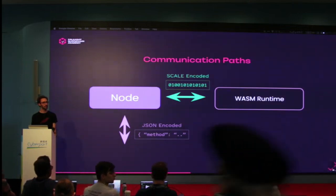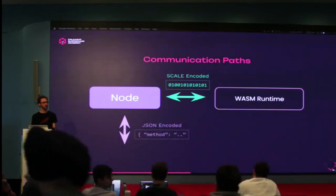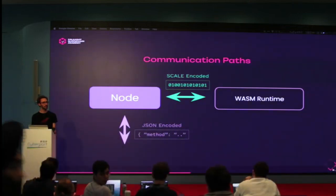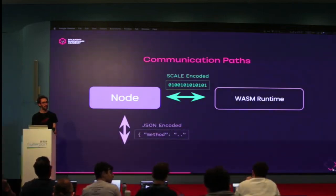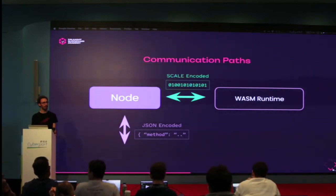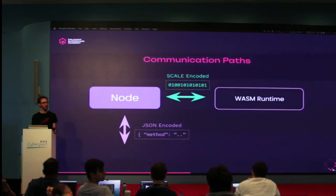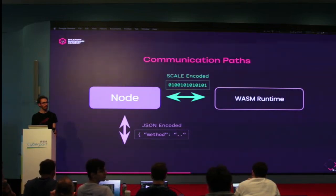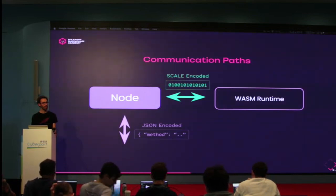BCS stands for Binary Canonical Serialization, which is specific to the Libra project from Facebook — they created their own data format for highly compressed message encoding. SCALE, by contrast, focuses more on diagnostic message passing.